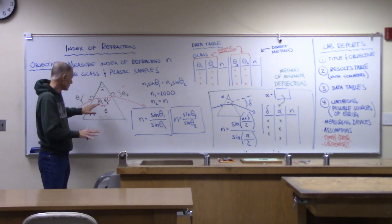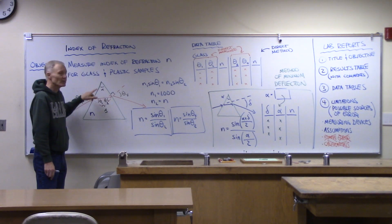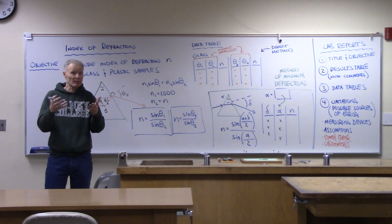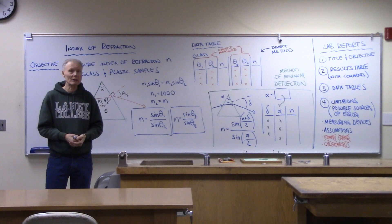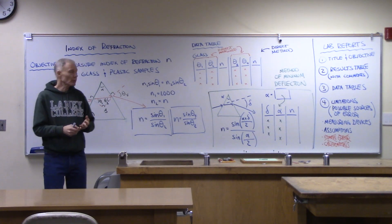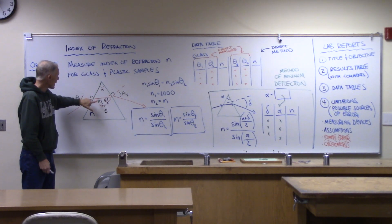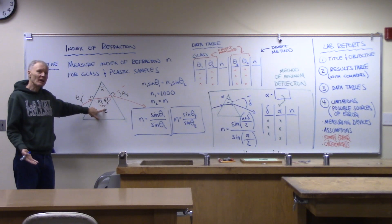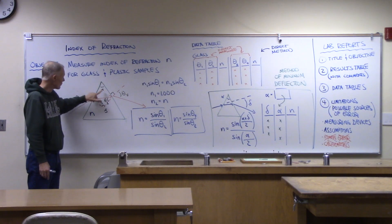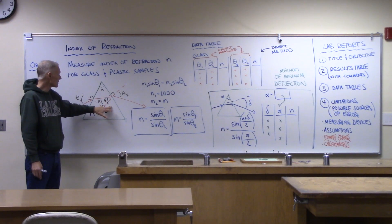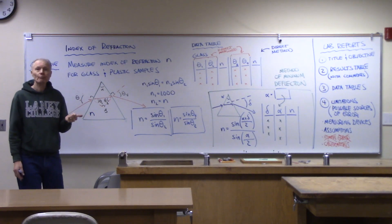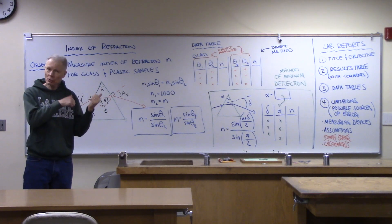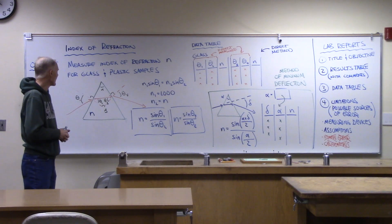Theta two and theta three are related based on the geometry of our prism. The samples we're using today have an apex angle of 60 degrees — we'll verify that with our protractors. Since they're at 60 degrees, I can work my way around these triangles: we can show that theta two plus theta three combined have to equal alpha. So theta two and theta three are going to combine to be 60 degrees. Check the geometry out and make sure you understand how these diagrams work.